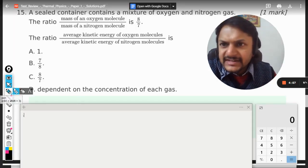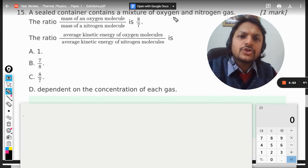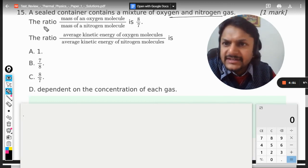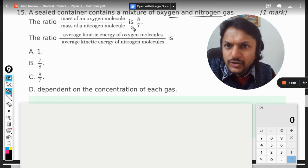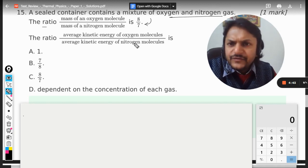Okay, so let us see how to do this question. A sealed container contains a mixture of oxygen and nitrogen gas, and the ratio given is mass of the oxygen molecule to mass of nitrogen molecule, and it is given as 8 by 7. So let us first of all verify this thing, like whether it is right or wrong.